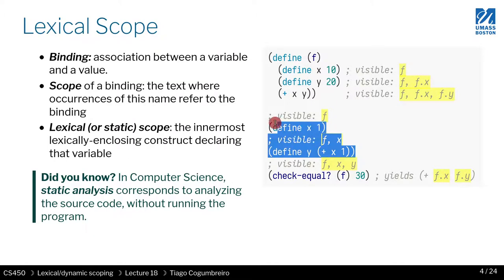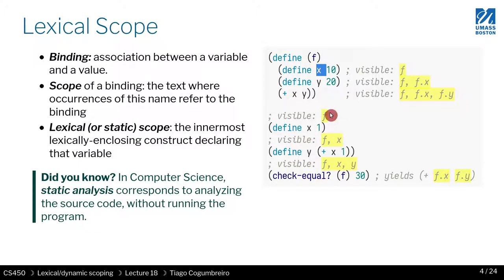This idea of local reasoning is very important for modular analysis and understanding programs. Otherwise it would be very unwieldy to think about this program because you wouldn't know whether this x refers to this x or not. If it depends on the context, it becomes really crazy, as we'll see in the next few slides.